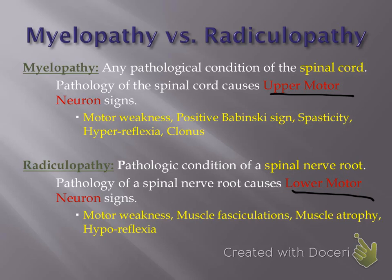Depending on whether it's an upper motor neuron or a lower motor neuron that's being compressed, the signs and symptoms are going to differ. With upper motor neuron disease, you are going to have motor weakness, a positive Babinski sign, spasticity, hyperreflexia, and clonus.